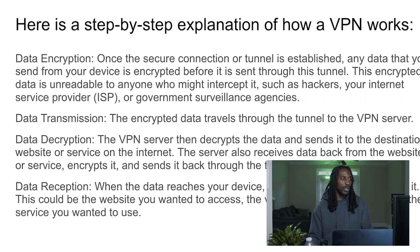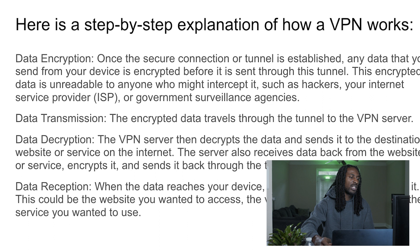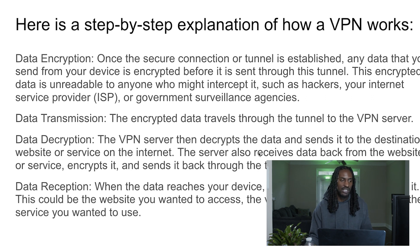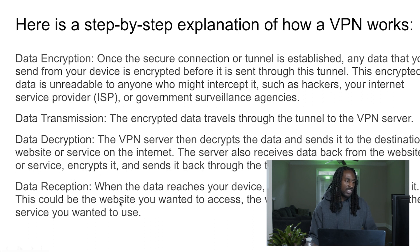In terms of data transmission, the encrypted data travels through the tunnel to the VPN server. Then data decryption: the VPN server decrypts the data and sends it to the destination website or service. The server also receives data back from the website, encrypts it, and sends it back through the tunnel to your device. When the data reaches your device, it's decrypted so you can use it — whether that's the website you wanted to access, the video you wanted to watch, or the service you wanted to use.